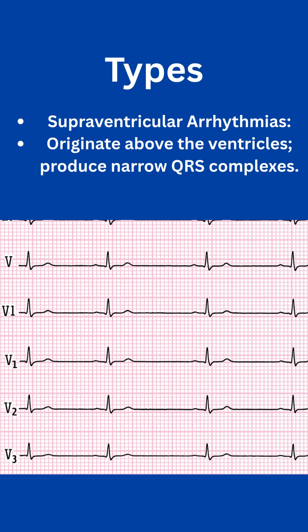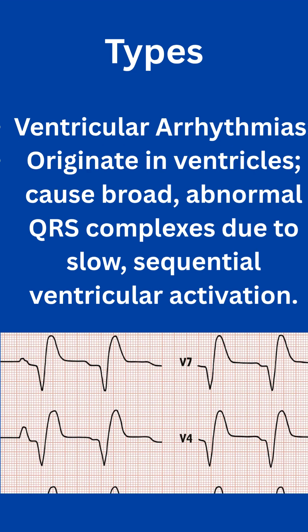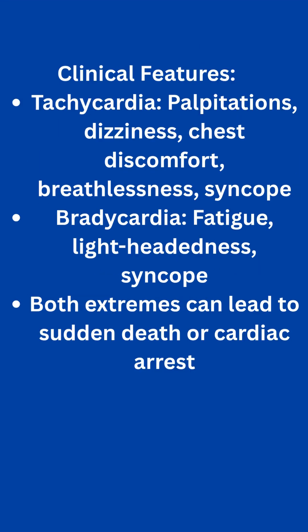Arrhythmias are classified based on their origin. Supraventricular arrhythmias come from above the ventricles — the atria or AV node — and usually show up as narrow QRS complexes on an ECG. Ventricular arrhythmias originate in the ventricles and typically cause broad, bizarre QRS complexes. But appearances can be deceiving: some supraventricular rhythms may mimic ventricular ones if there's a conduction block or accessory pathway.